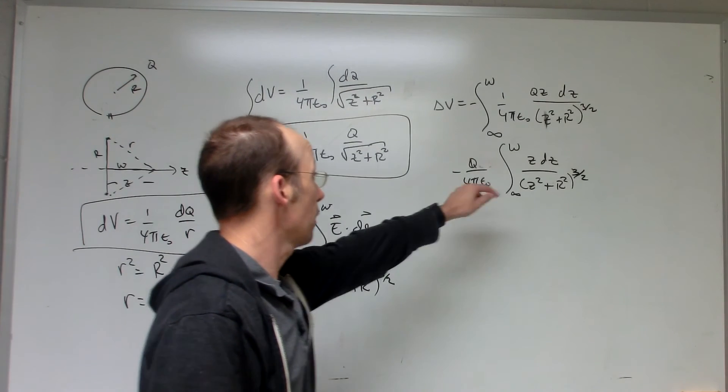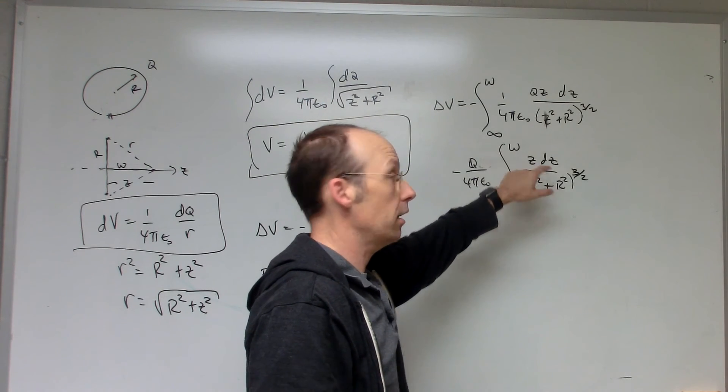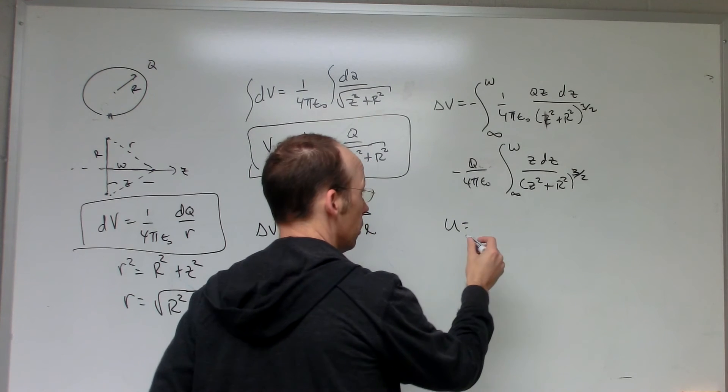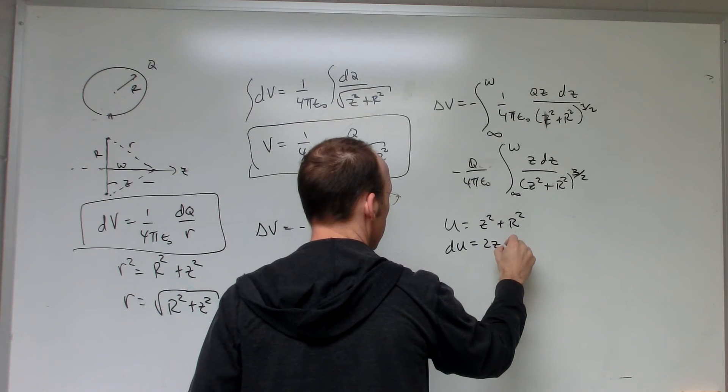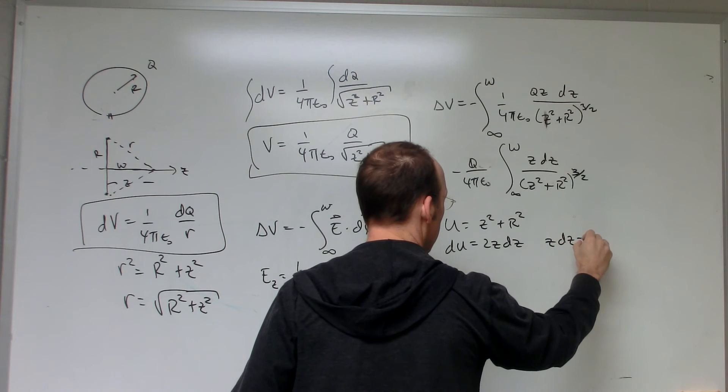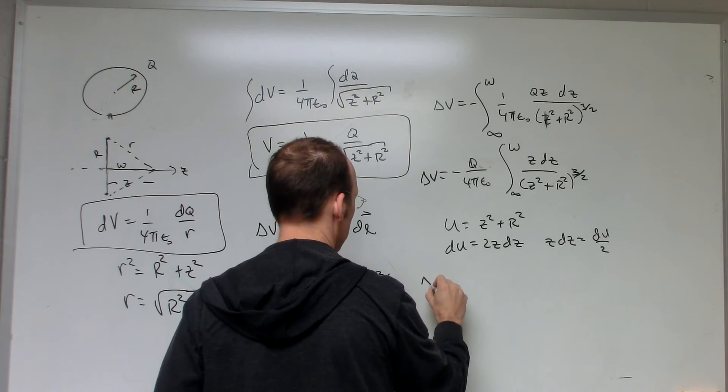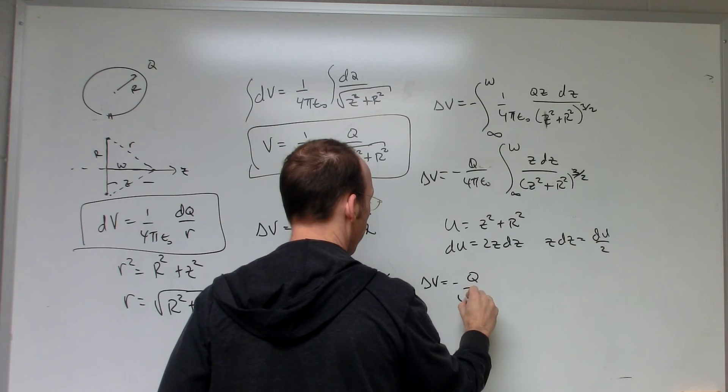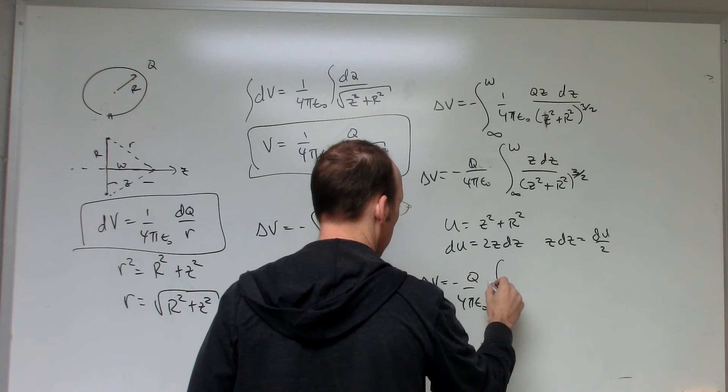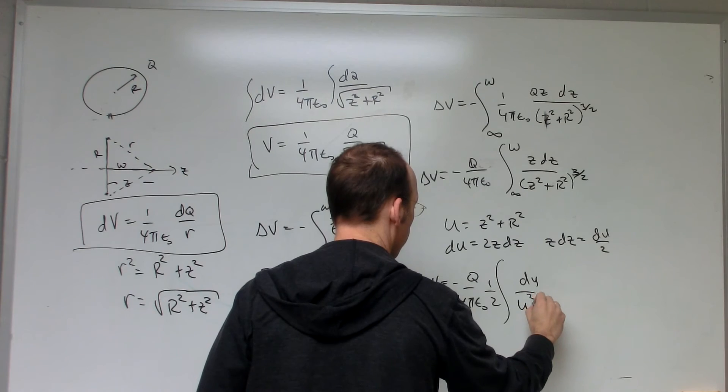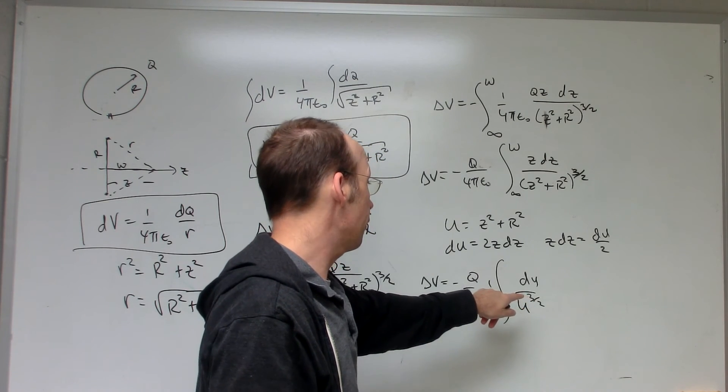In this case, I have something to the power, but this stuff inside, if I take the derivative of that, I get a z dz. So I'm going to do u substitution. u equals z squared plus R squared, du equals 2z dz. So z dz equals du over 2. So now my integral becomes negative Q over 4π epsilon not. I'll leave the limits off right now. I'll get a 1 over 2, du over u to the three halves. So now I can use my power rule.